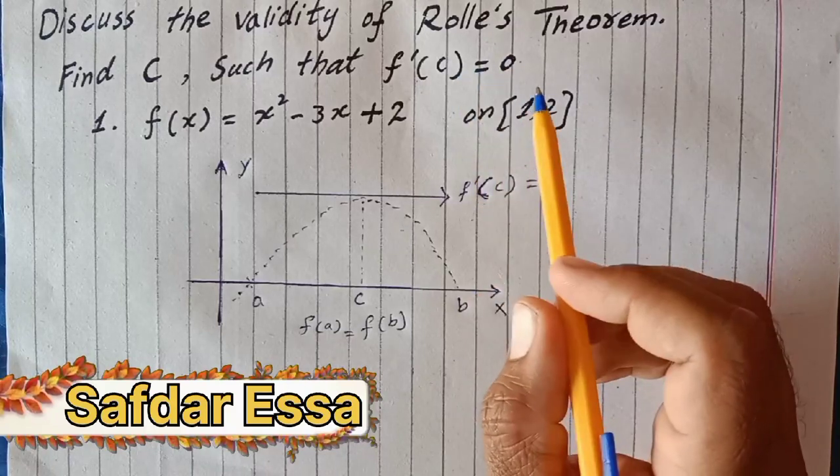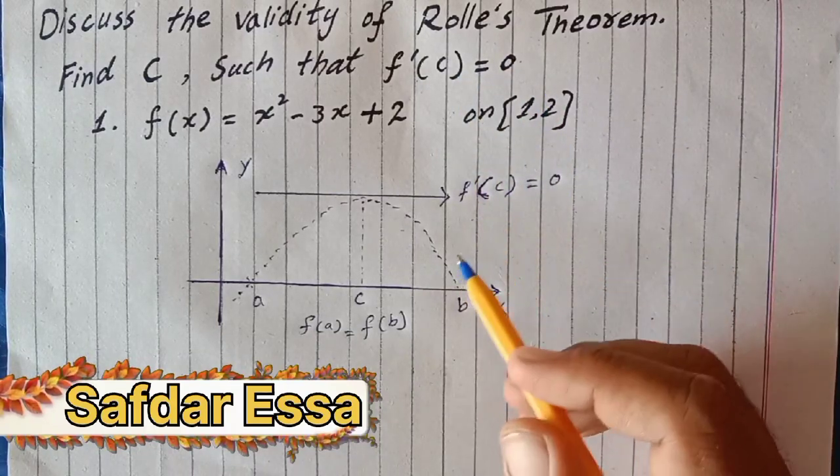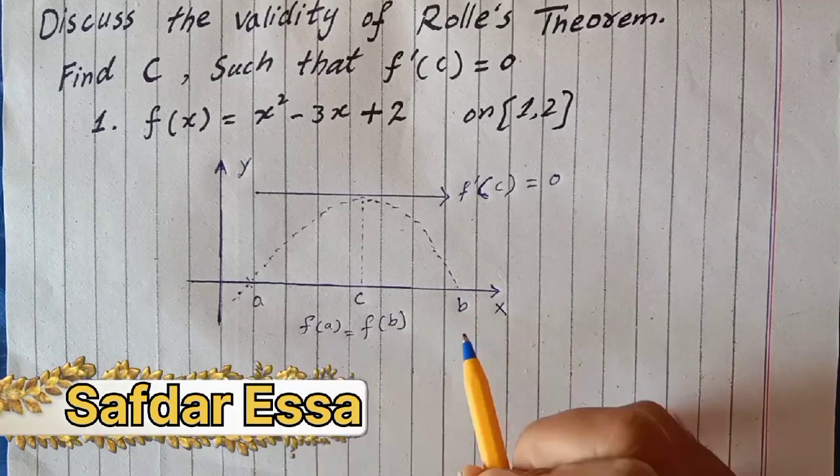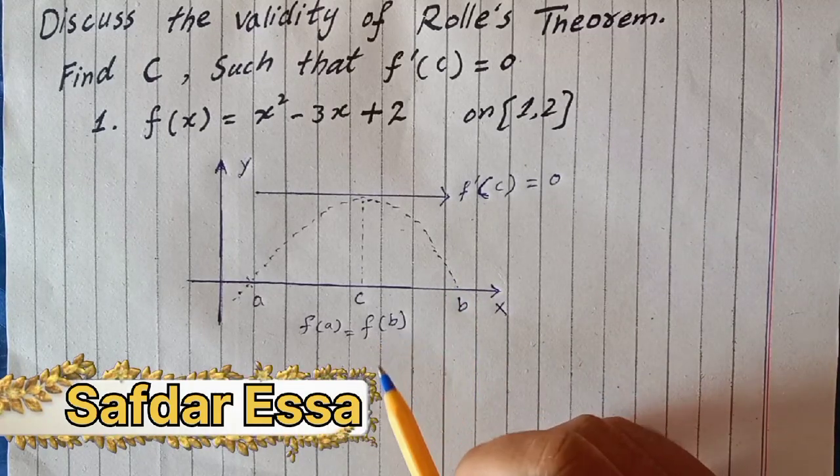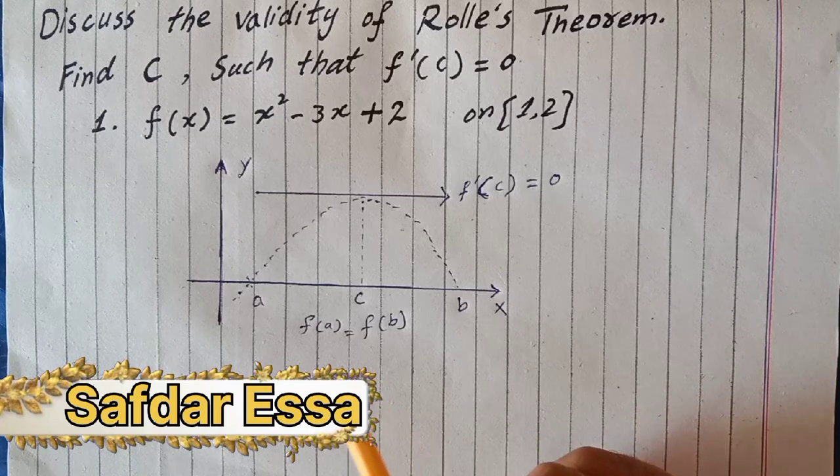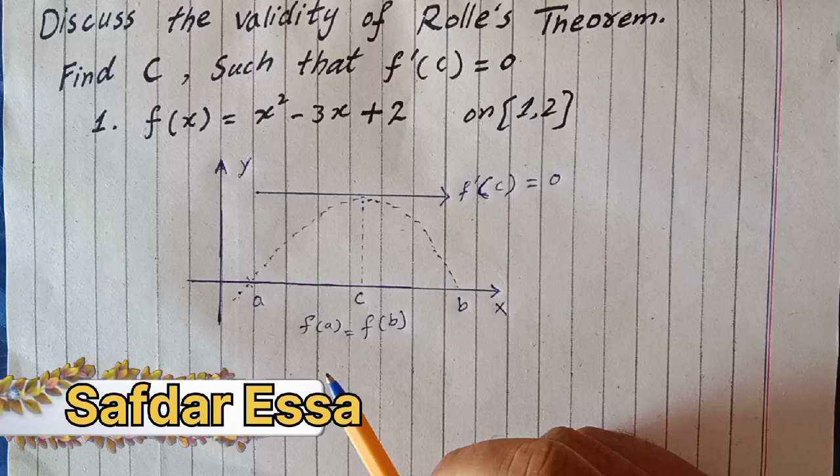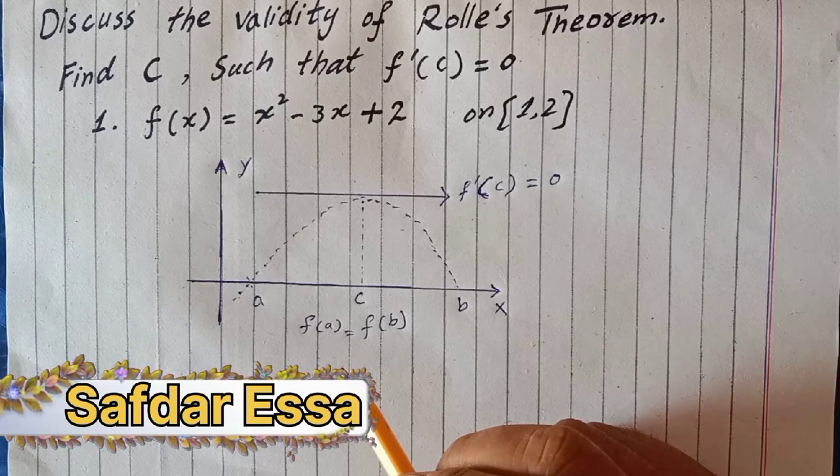First of all, Rolle's Theorem states: If a function f is continuous on the closed interval [a, b] and differentiable on the open interval (a, b) such that f(a) is equal to f(b).